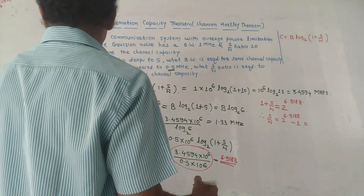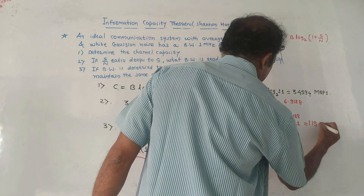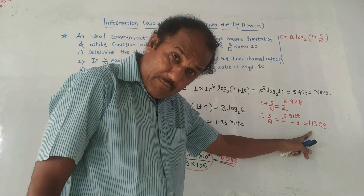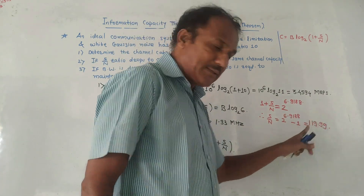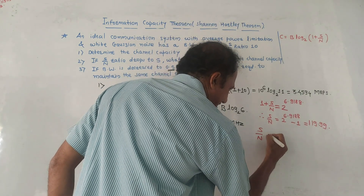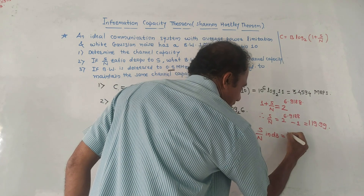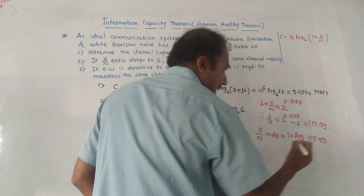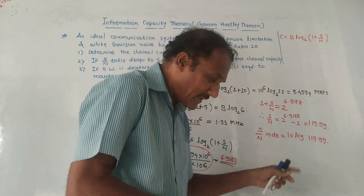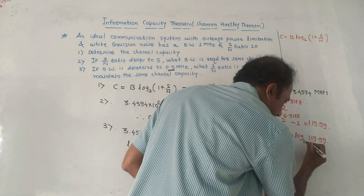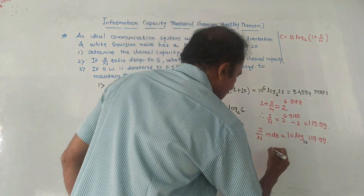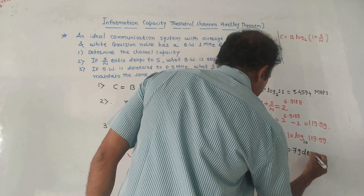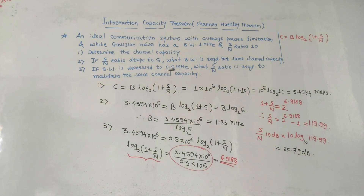The value of S/N works out to 119.99. This is the signal-to-noise ratio. However, S/N ratio must always be expressed in decibels. So S/N in dB = 10 × log₁₀(119.99), which gives 20.79 dB. This is the answer to the last part of this numerical.